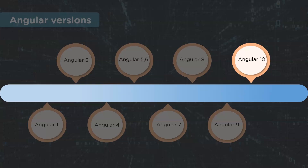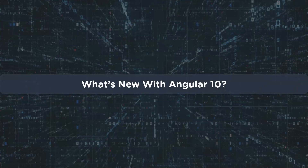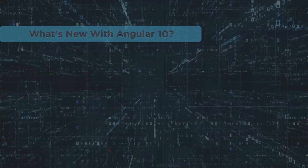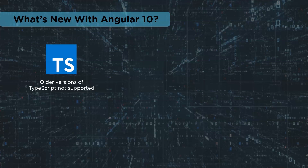Let's look at the new features of Angular 10 in depth. First, older versions of TypeScript are no longer supported. The previous versions of Angular supported TypeScript 3.6, 3.7, and 3.8, but with Angular 10 TypeScript was bumped to version 3.9. TSLib has been updated to version 2.0 and TSLint has been updated to version 6.